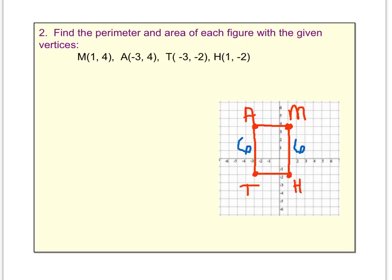And from T to H, 1, 2, 3, 4, which means A to M is also 4.